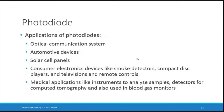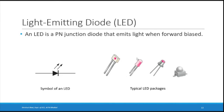Photo diodes are used wherever you need to detect the presence of light — as light sensors, in optical communication systems, automotive sensors, solar cell panels, consumer electronic devices like smoke detectors, CD players, televisions, remote controls, and in medical applications such as CT scan detectors and blood gas monitors.